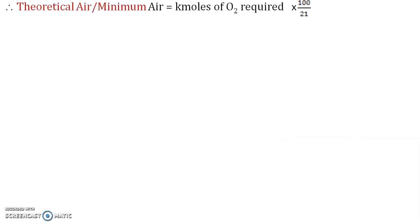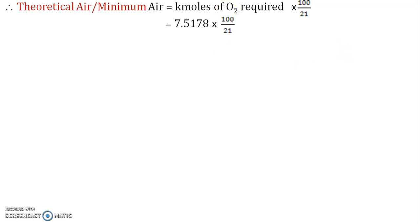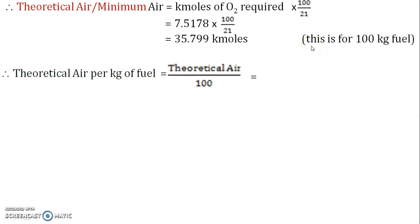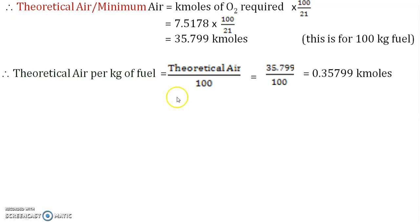The next calculation is for theoretical air. We now know the kilomoles of oxygen required. Since air contains 21% oxygen by volume, we use the relation: if 100% air contains 21% oxygen, then for our calculated oxygen quantity, the total air can be found. This gives the theoretical air in kilomoles for 100 kg of fuel, which is then divided by 100 to get the value per 1 kg of fuel.